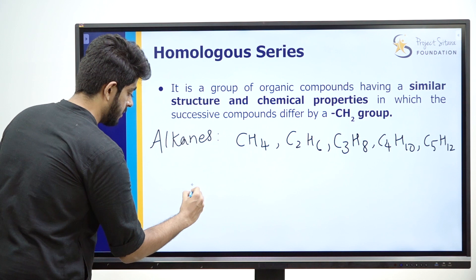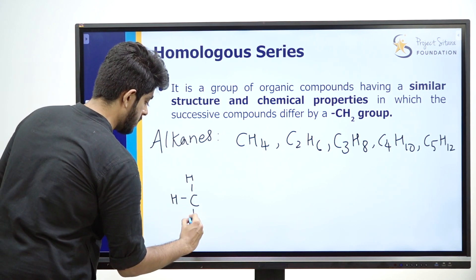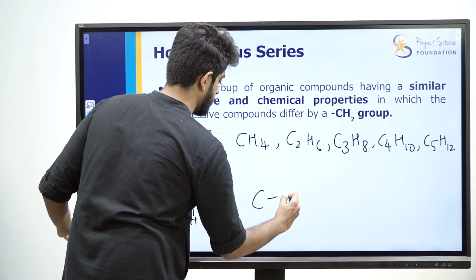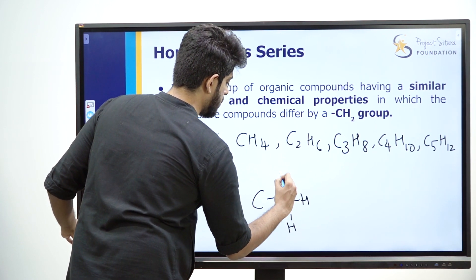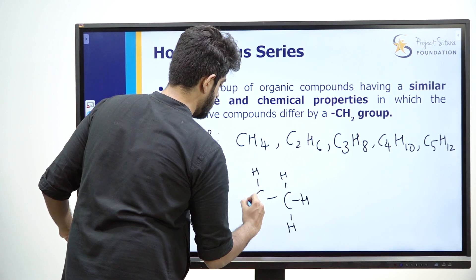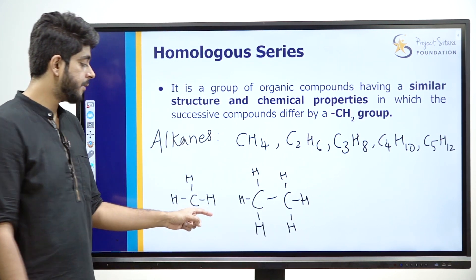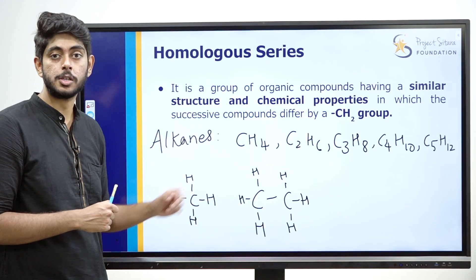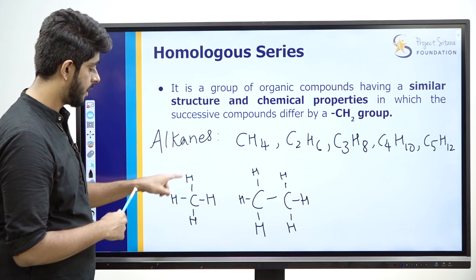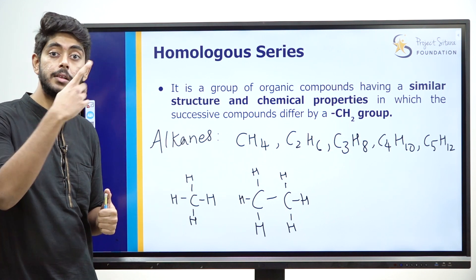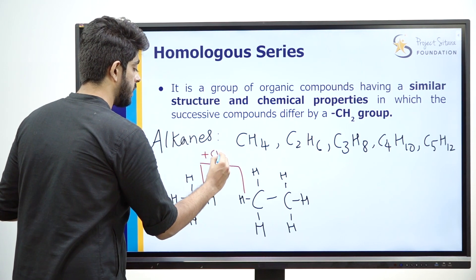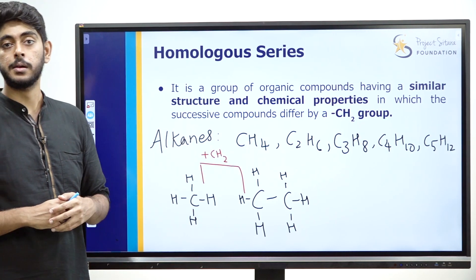First, write the structure of methane. Now compare it with the structure of ethane. The carbon atoms: methane has one carbon, ethane has two — so one extra carbon atom. Hydrogen: methane has four, ethane has six — two more hydrogen atoms. So when we add one extra CH2 group to methane, we get ethane.